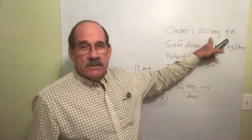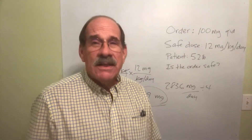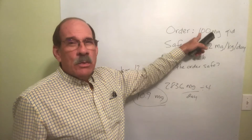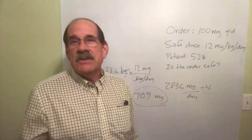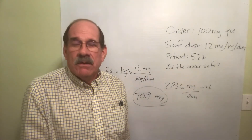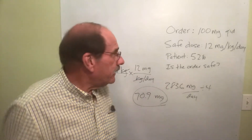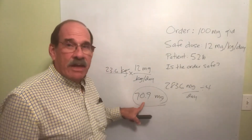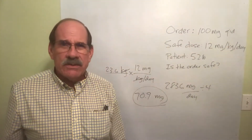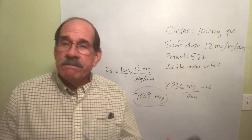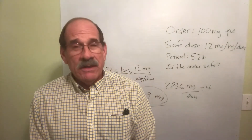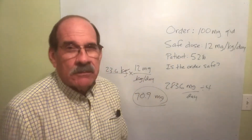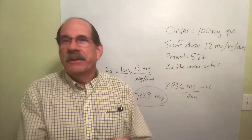Well, what happens next if it isn't safe? The licensed prescriber ordered this, and you went, 'I don't know, this looks wrong.' You looked either on the drug label or in an authoritative drug book and found out that the manufacturer said 12 milligrams per kilogram per day is safe. You determined that for your patient the safe per-dose amount is 70.9 mg — the doctor's order is way off base. So what do you do? You call the doctor. You say, 'Excuse me, doctor, this is so-and-so' — tell them who you are.